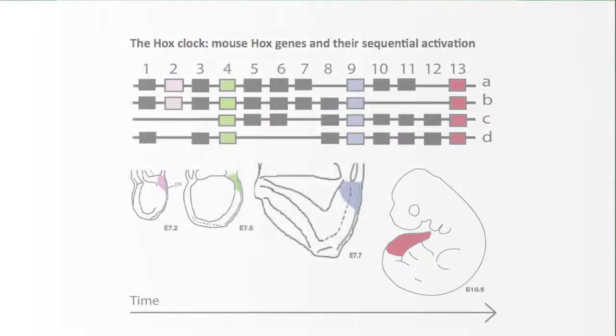So these hox genes function as a sort of molecular clock, making sure that the tissues are patterned as they are emerging from the tip of the embryo.